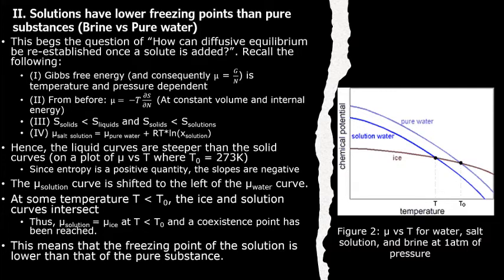Observe the coexistent point between pure water and ice is at T naught equals 273 degrees Kelvin, where the ice and water curves intersect. However, the salt solution curve is shifted to the left with respect to the pure water curve due to point 4. Hence, the coexistent point of ice and brine is at T less than T naught. In other words, the freezing point of the solution is lower than the freezing point of the pure substance.